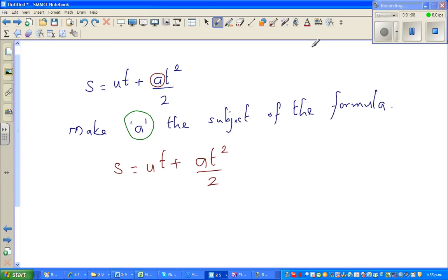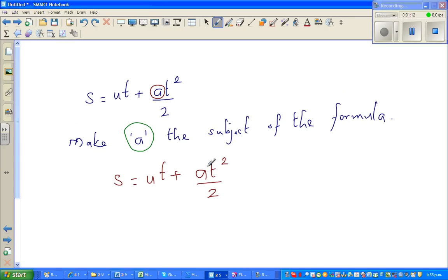Students tend to get very confused when making the subject of a formula, but if you think about it, it's basically isolating one term or expression. I want to get rid of ut from this side, so I take away ut from both sides. This side becomes s minus ut, and these cancel, equals at squared over 2.